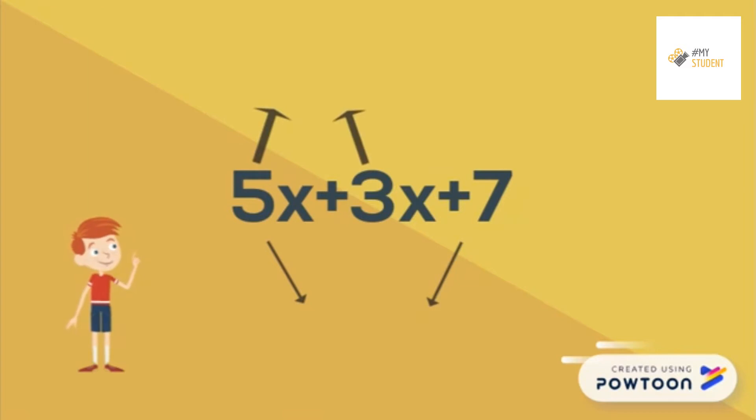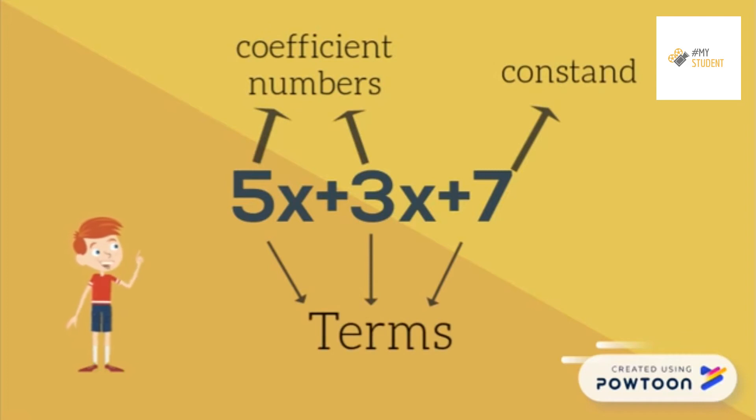5 and 3 are constant numbers. 7 is a constant number, and these three numbers are terms.